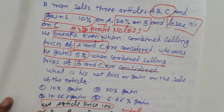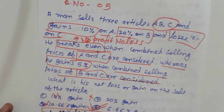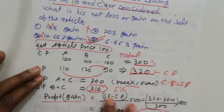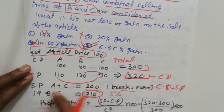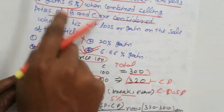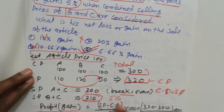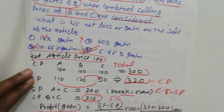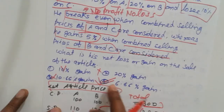Overall profit: SP minus CP upon 100 = 320 minus 300 divided by 300 into 100 = 6.66 percent gain. Both statements are verified, and the fourth option is correct.